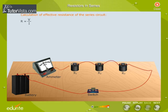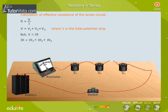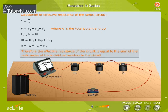The total potential V = V1 + V2 + V3. Applying Ohm's law: I·R = I·R1 + I·R2 + I·R3. Therefore, the effective resistance of the circuit is equal to the sum of the resistances of the individual resistors: R_eff = R1 + R2 + R3.